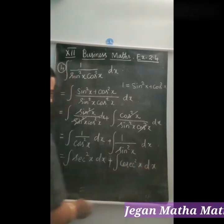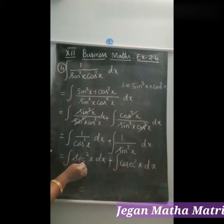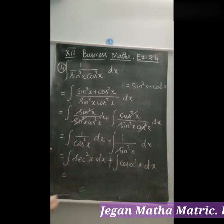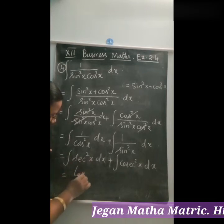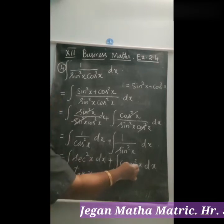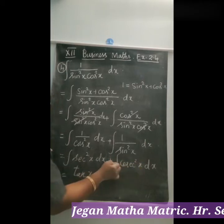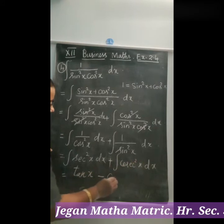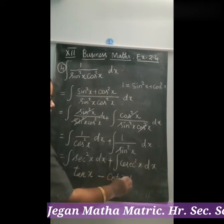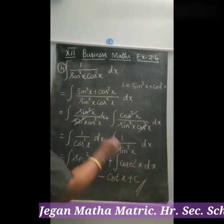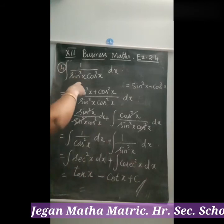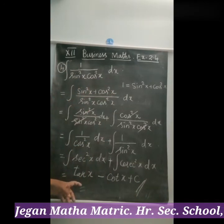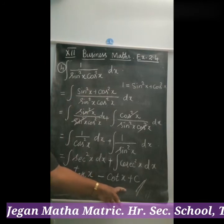Using the integration formulas: sec²x integrates to tan x, and cosec²x integrates to minus cot x. So the answer is tan x minus cot x plus c. This is the answer for integral of 1/(sin²x cos²x) dx.